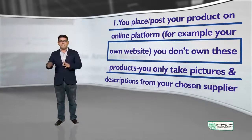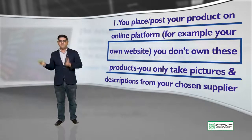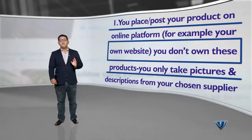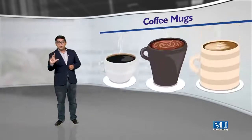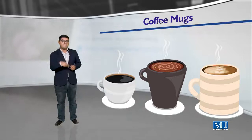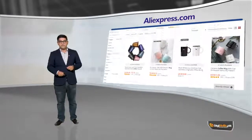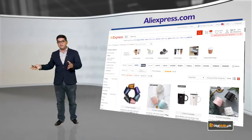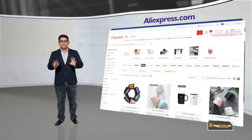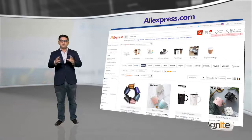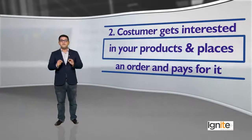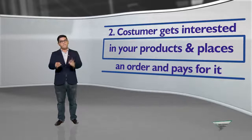Aap AliExpress se ek supplier choose karenge, jaake uski tasweer aur description dal denge. For example, let's say koi naye tarah ka coffee mug aaya hai. Aap AliExpress.com pe jaayenge, dekhenge us tarah ka coffee mug kaunsa supplier offer karta hai, uske images lenge, aur apni website pe ek product description dal ke usko add kar denge. Step two: customer gets interested in your product and places an order and pays for it.